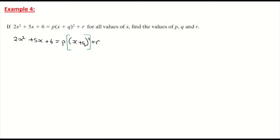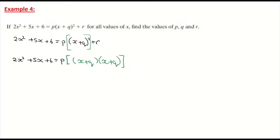So we have 2x² + 5x + 6 equals p times (x + q)². Squaring (x + q) means (x + q) times (x + q). I close the square bracket and don't forget to add on the r at the end. Now I'm going to multiply out those square brackets.